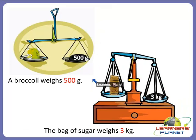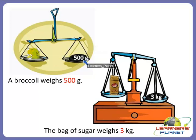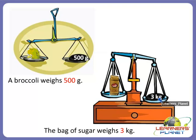A single broccoli weighs 500 grams. A bag of sugar weighs 3 kg — because it is a full bag of sugar it is heavier and carries more mass, so it is measured in kg.